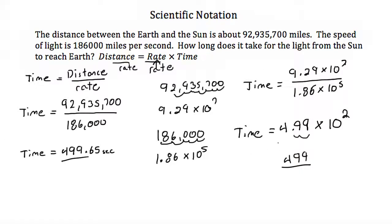So the benefit of scientific notation is that if you end up with very long numbers like 92,935,700, because 9.29 divided by 1.86 is easier to deal with than 92,935,700 divided by 186,000.